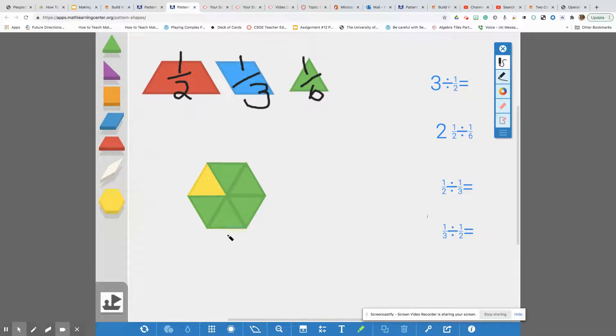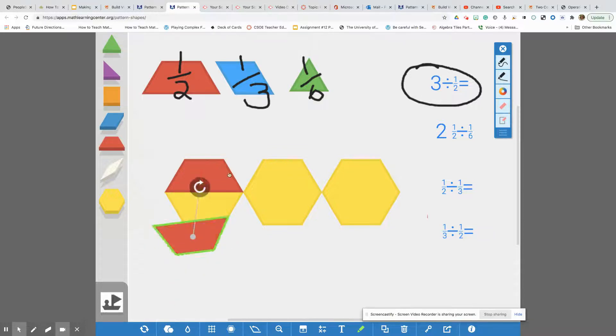Our first problem here is three divided by one half. So let's just say hypothetically that I have three pizzas. And I want to see if I have three pizzas, how many half pieces can fit so I can make shares. I'm dividing by half. How many halves can fit into a third? Are you starting to see a pattern?